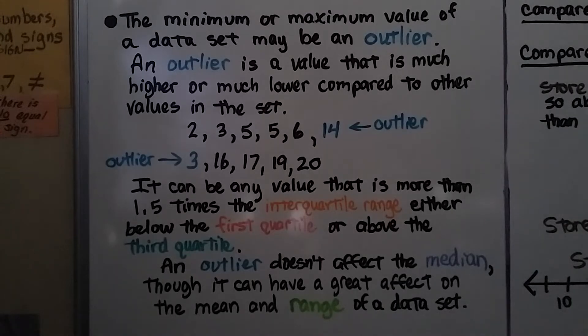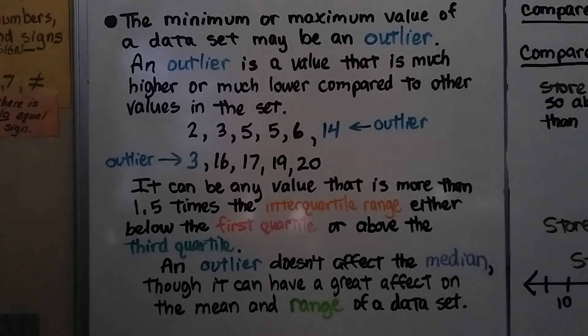The minimum or maximum value of a dataset may be an outlier. An outlier is a value that is much higher or much lower compared to the other values in the set.